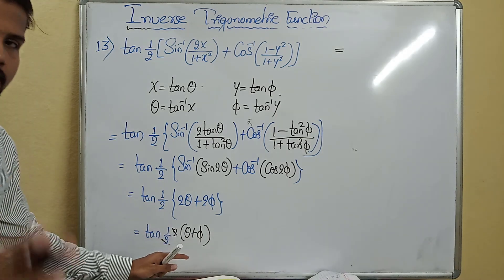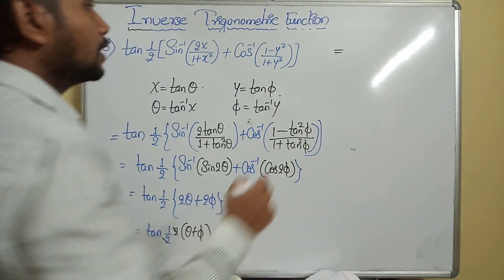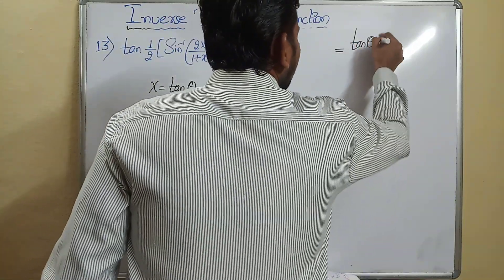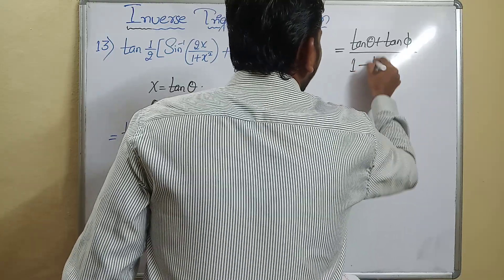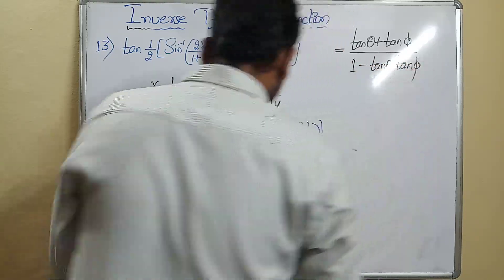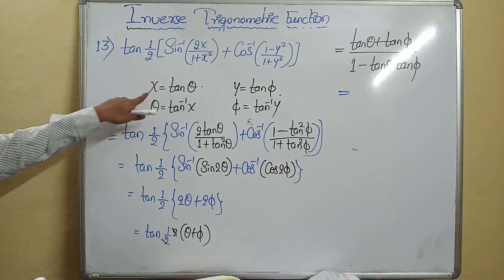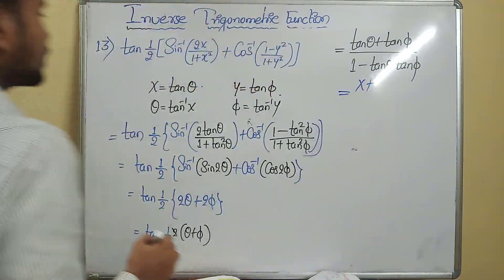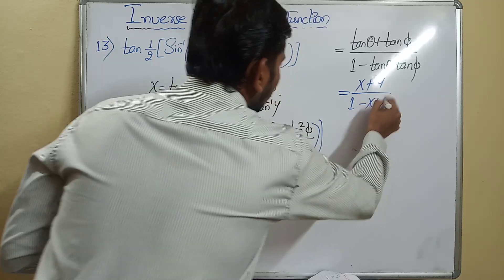Using the formula tan(A + B) = (tan A + tan B) / (1 − tan A tan B), it becomes (tan θ + tan π) / (1 − tan θ · tan π). Tan θ is x and tan π is y, so the result is (x + y) / (1 − xy).